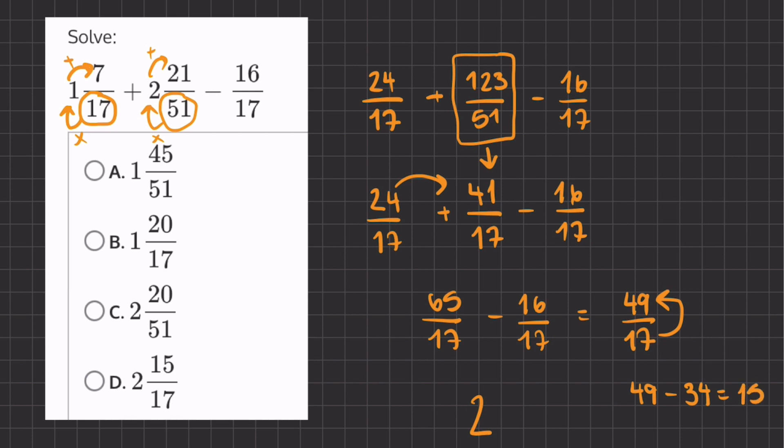So our remainder will be 15 over our denominator of 17, meaning that 2 and 15 over 17 will be our final answer.